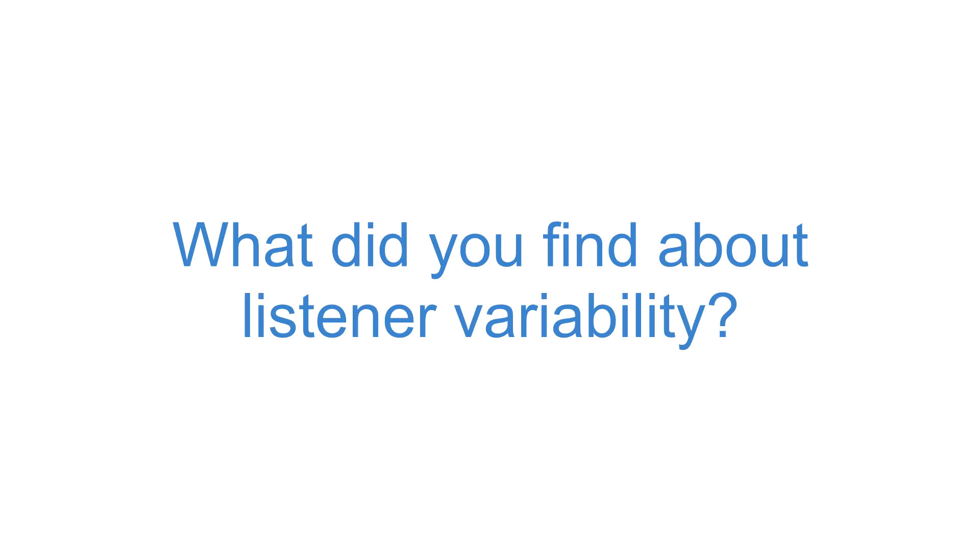Each individual listener also has variability within him or herself — I might hear something different the second time I hear it than the first time. We were trying to understand the impact of within-person variability and between-person variability on speech intelligibility. We found that there's actually more variability within listeners than between listeners. However, that can be accounted for by variables related to the nature of the words and sentences the children were producing. People were quite consistent from time one to time two — making the same mistakes, getting the same things right.